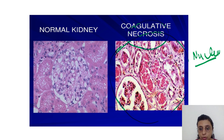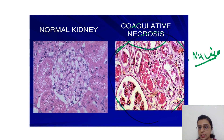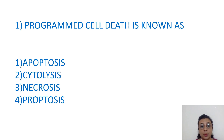A larger group of cells are involved. This is an example of coagulative necrosis, where the architecture can still be appreciated.